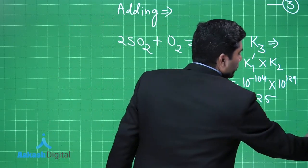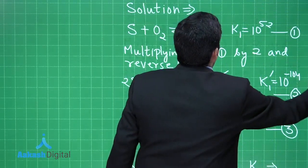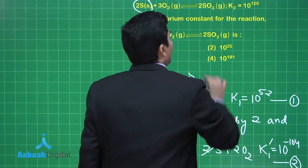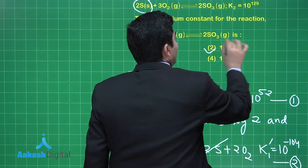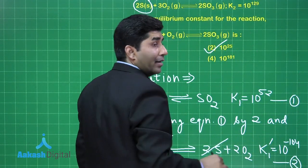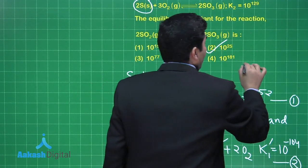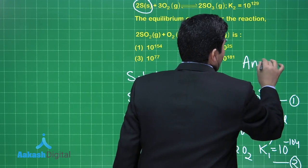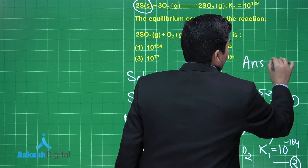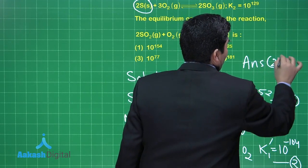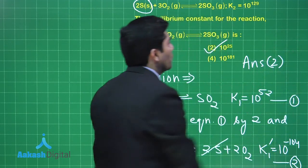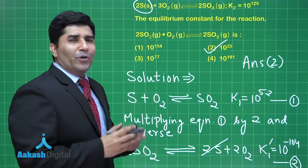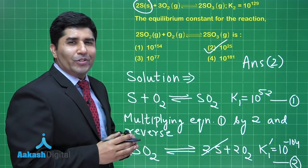So the final answer is K3 equals 10 to the power 25. Checking the options, this corresponds to answer number 2. Let us move on to the next question.